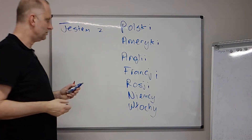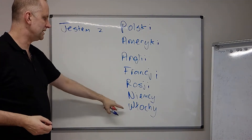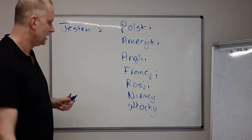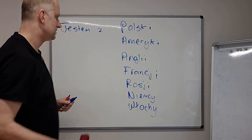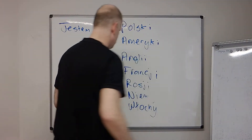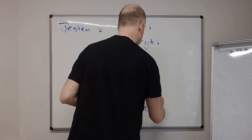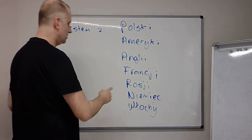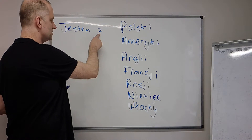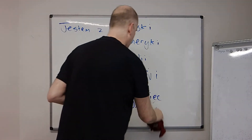Now putting ze before Niemcy and Włochy changes these in different ways. So Niemcy becomes ze Niemiec, and then ze Włoch. When you say ze, you have to use those forms.